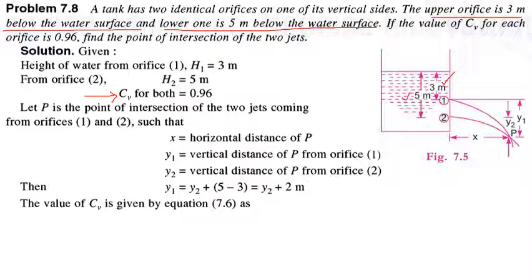Assume that P is the point of intersection of the two jets coming from orifices 1 and 2, such that x is the horizontal distance of P, y1 is the vertical distance of P from orifice 1, and y2 is the vertical distance of P from orifice 2. Then y1 = y2 + (5 − 3) = y2 + 2 meters, since 2 meters is the distance between the two orifices. So the distance from P to the upper orifice equals the distance from P to the lower orifice plus 2 meters.